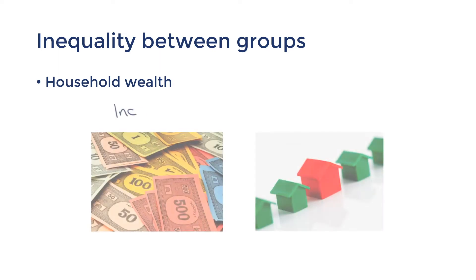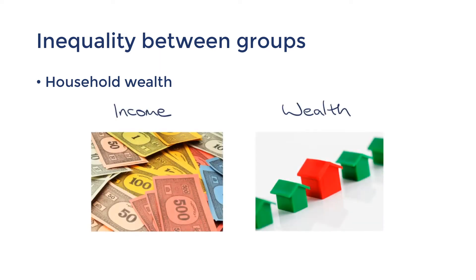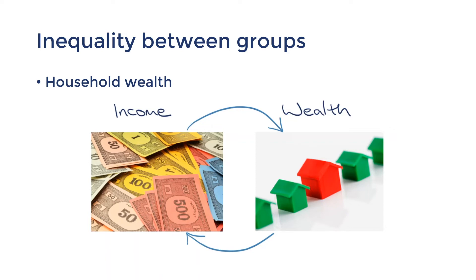This is because high-income earners have the ability to accumulate assets and pay off debt quicker, so they have higher net assets or wealth. And since wealth is often in the form of assets that can generate a return — such as investment property or other financial investments — high-wealth households have the ability to generate higher incomes. You can see how income and wealth often go hand in hand, and that's one of the reasons that inequality often worsens over time.